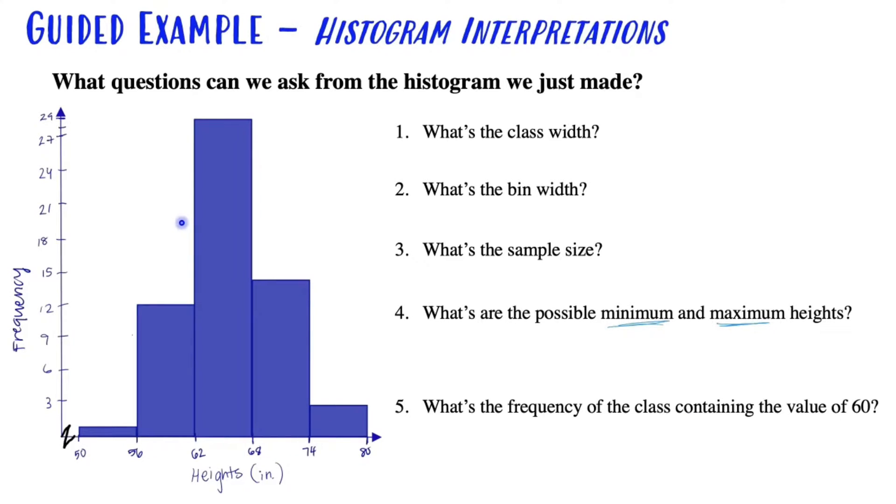What does this graph tell you? Well, here's one thing I could ask you from this graph is what's the class width? How do we determine that? You would subtract the two lower class limits from one another. So 56 minus 50, and you could do another test point, 62 minus 56, and you can see that the class width is 6.